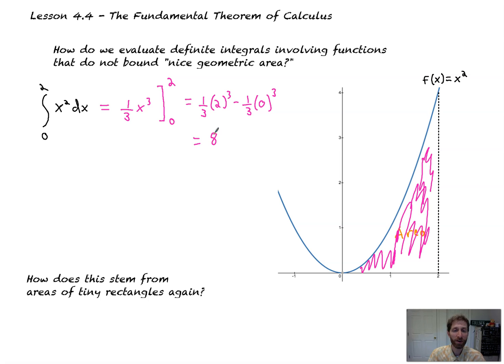That will give you the exact area. When we simplify that, two cubed is eight times one-third, that's eight-thirds. Holy moly! So that's the Fundamental Theorem. I'll go over it more formally in the next little bit.